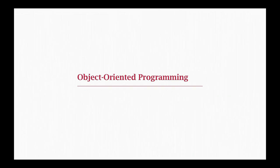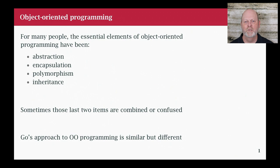For a lot of people, object-oriented programming usually comes down to four things — the combination of certain features: abstraction, encapsulation, polymorphism, and inheritance. My argument is that I think the last two of those are confused a bit, and that's sort of what I want to get into.